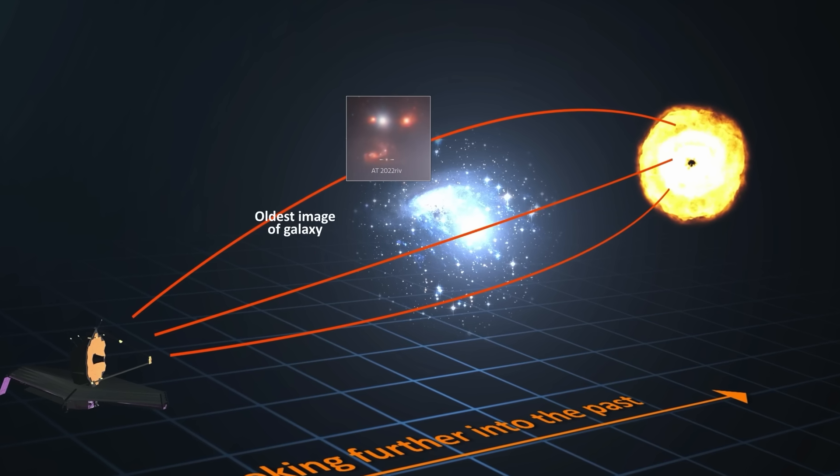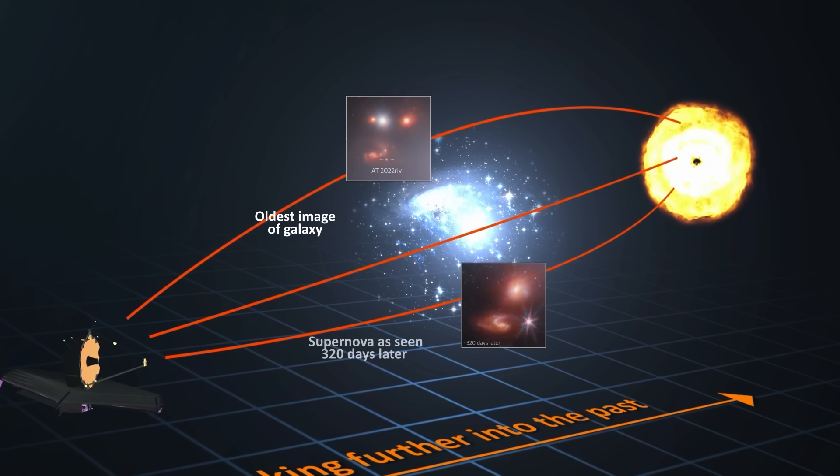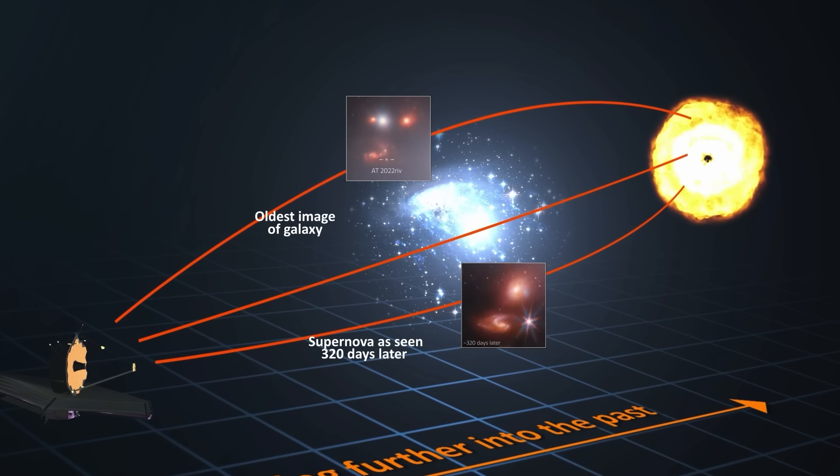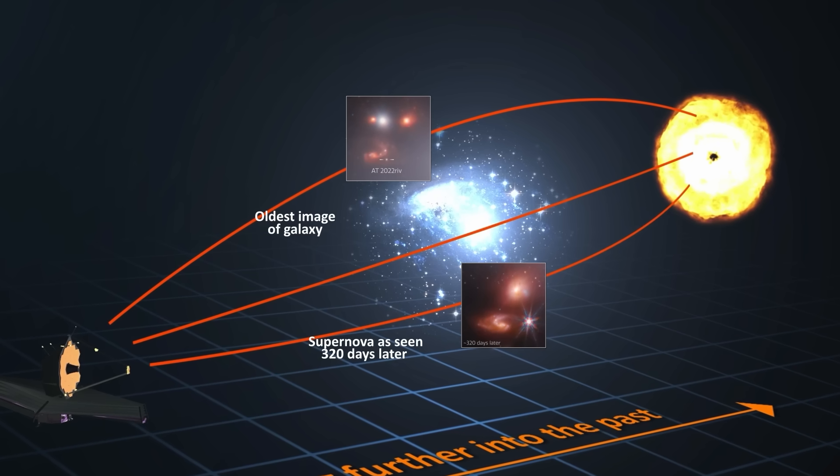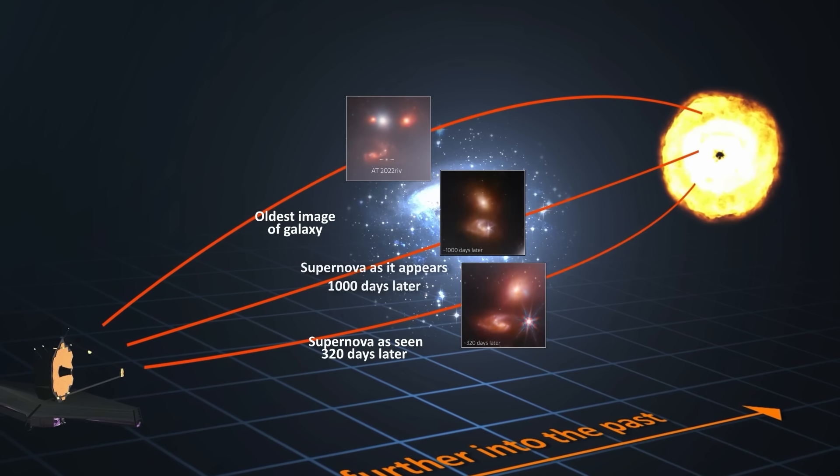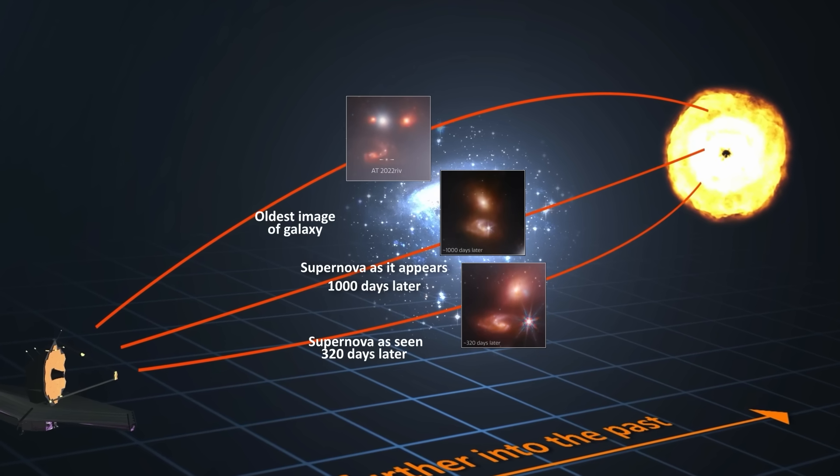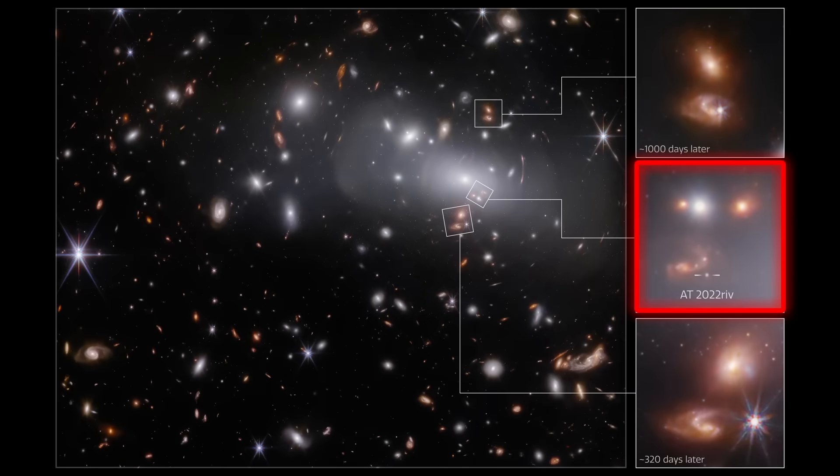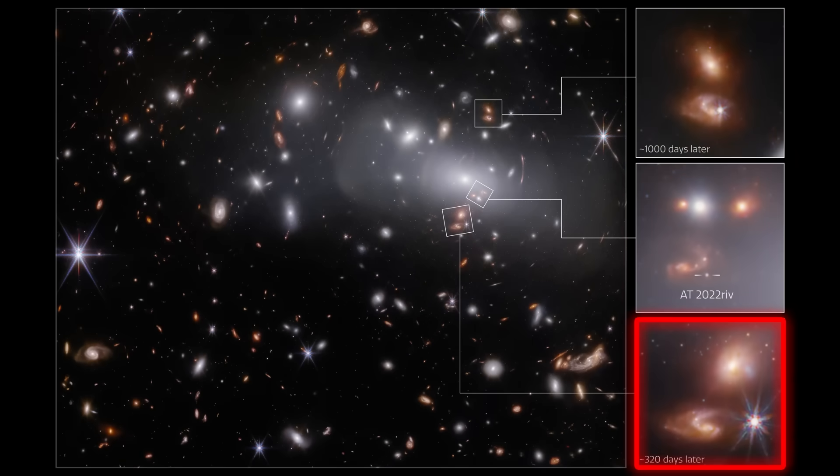The light that took the longest path gives us the oldest image of the galaxy, in which the supernova is still visible. The next image is of the galaxy as it appears roughly 320 days later than the first one. And the last image is a full 1000 days after the first. So in one picture taken by the JWST near infrared camera, we can see the evolution of the same supernova explosion.